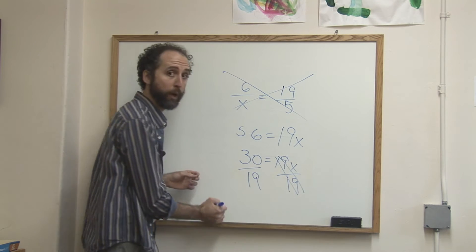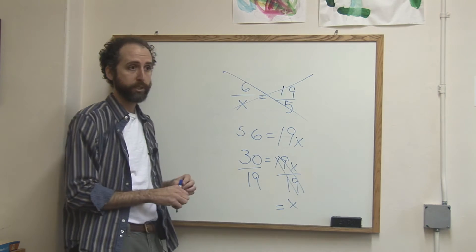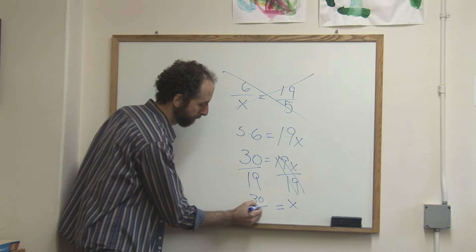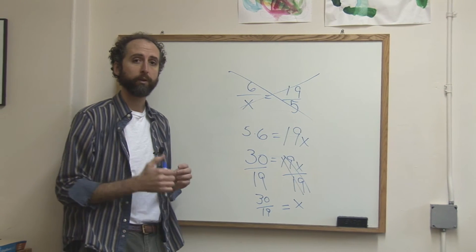19 over 19 cancels, that's why we did it. Leaving you x alone equals 30 over 19. You can either leave that as is, as a fraction, or you can use your calculator to get a decimal.